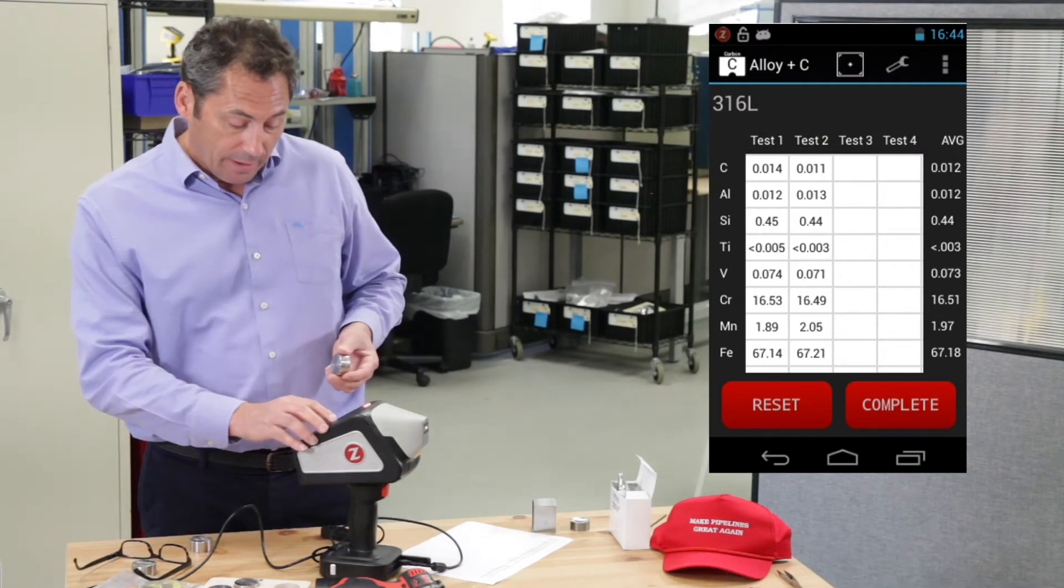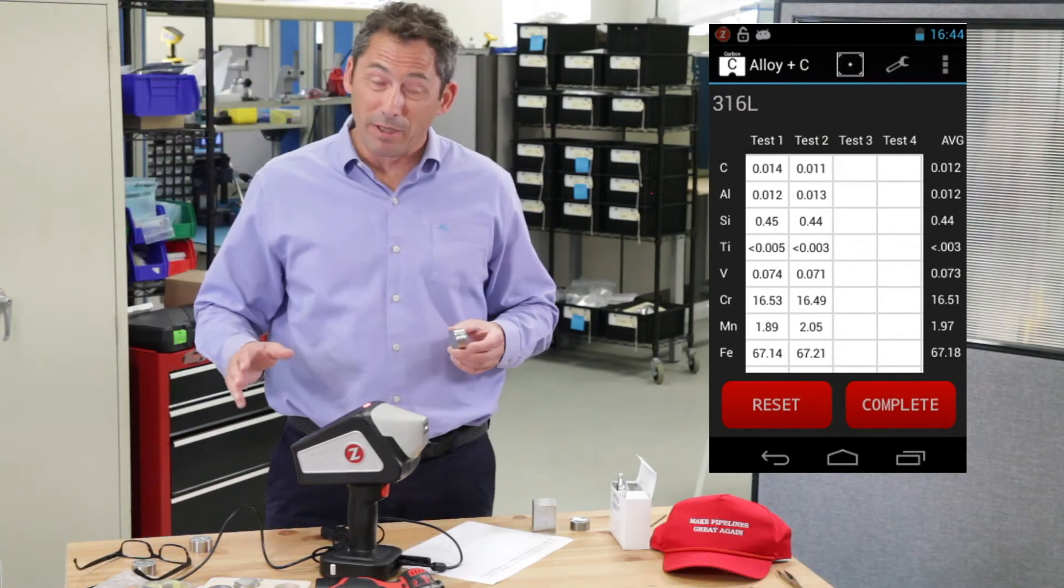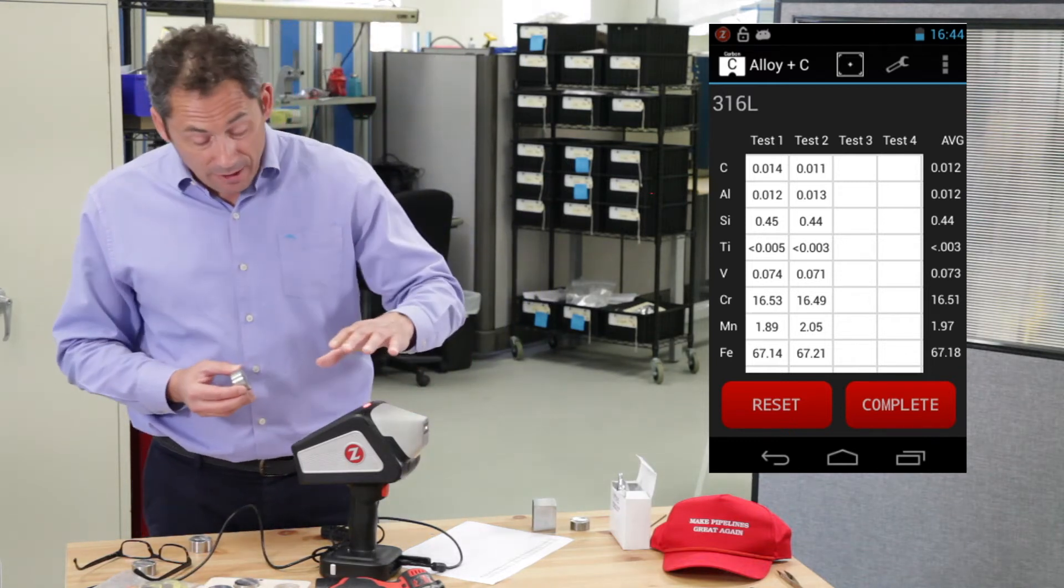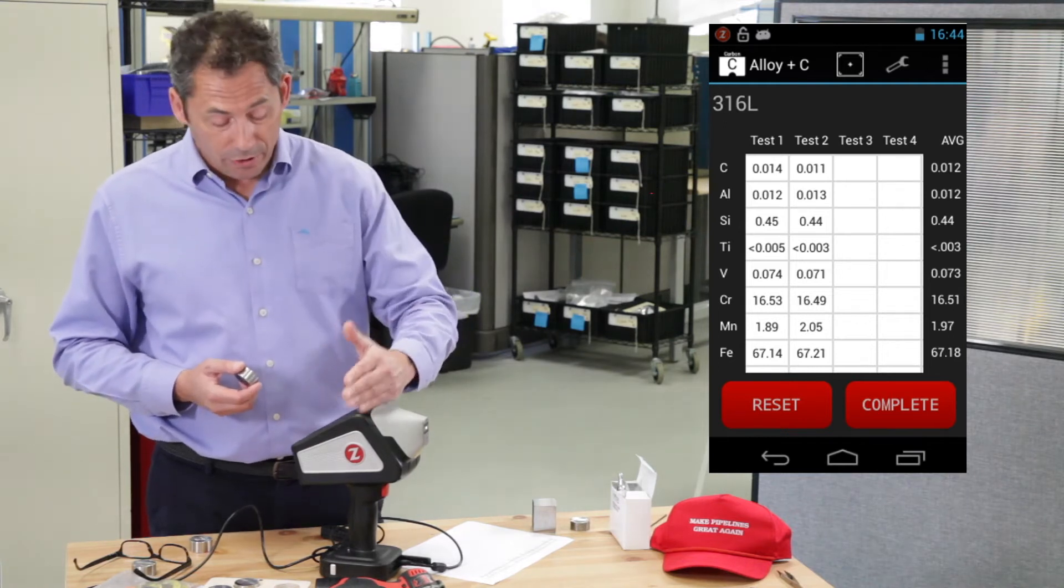So I did a couple of quick tests. Average of two tests, 012. So a little low by 40 ppm, but that's pretty good for about a six, seven second test. So the point is, because the carbon signal is stronger, we can do these L-grades with higher precision.